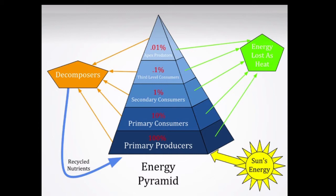We have already studied this energy pyramid. In it we observed that only 10% of energy is passed to the next trophic level. Primary producers get 100% energy from the sun. Primary consumers get only 10% of that, and 90% is passed into the environment as heat. From the primary consumer, only 1% is passed to the next trophic level — the secondary consumer — and the rest 9% goes to the environment. From there to the tertiary level, only 0.1% energy is passed, and from there to the apex predator only 0.01% energy is passed.